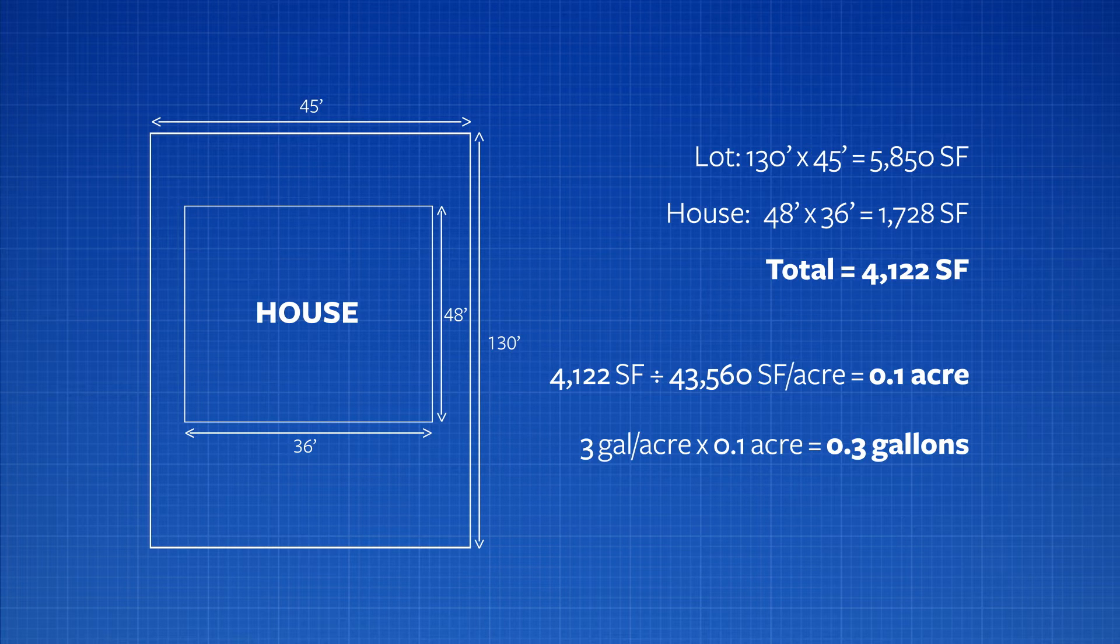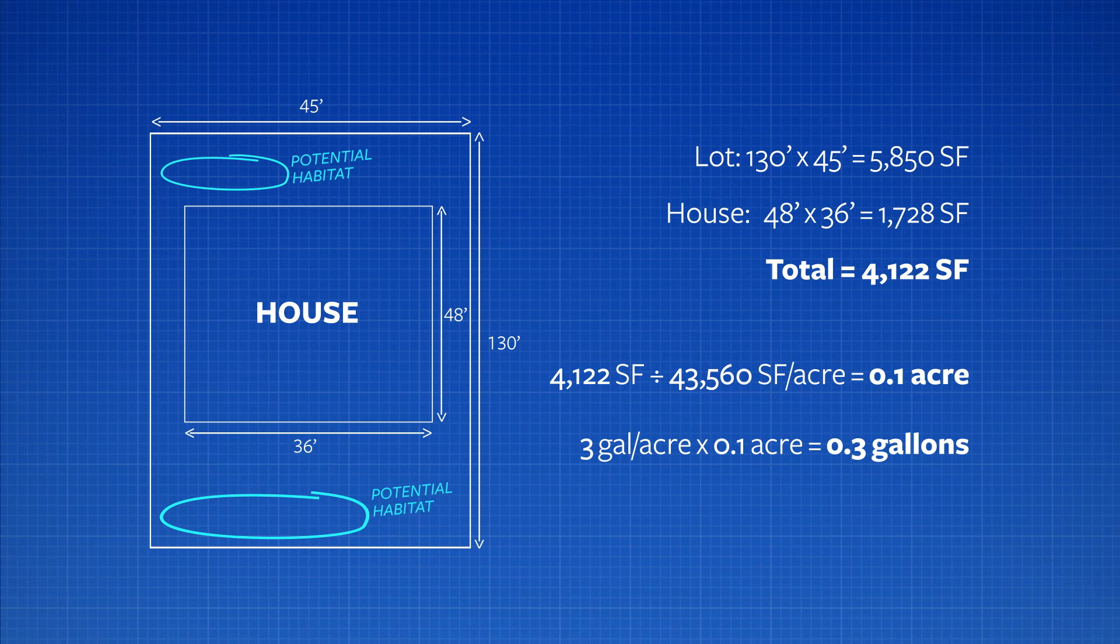One thing that's important is that not all houses are going to have the same extent of container habitat. Let's assume that this house was well taken care of, and you only really had in the back here maybe an area of potential habitat this wide, some over here around the tree in front, and a little here on the side.